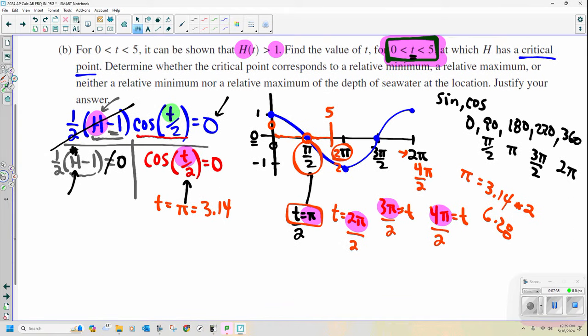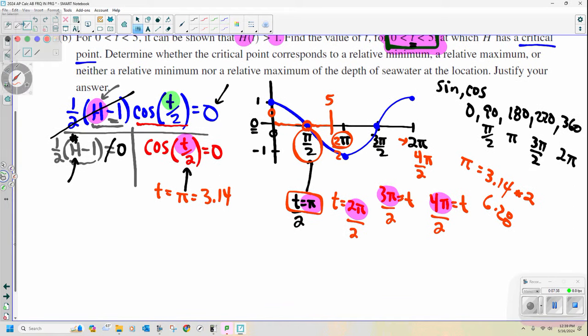So what I'm now going to do, okay, is I'm going to put this on a number line from 0 to 5. Okay, that's my time. Okay, and again, I'm looking for when my derivative is 0. That's when I hit pi, which is 3.14. That's a critical point.